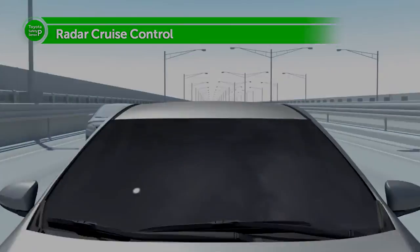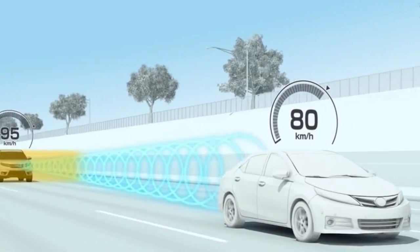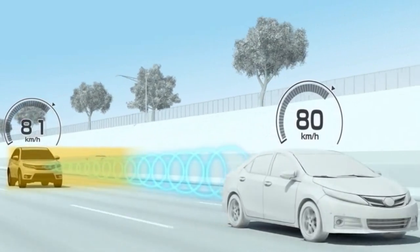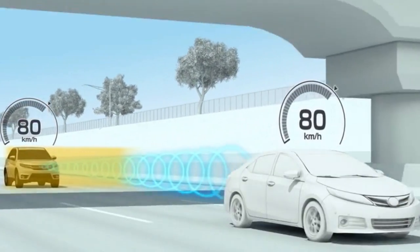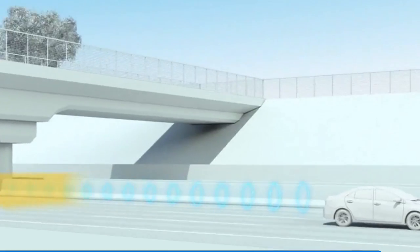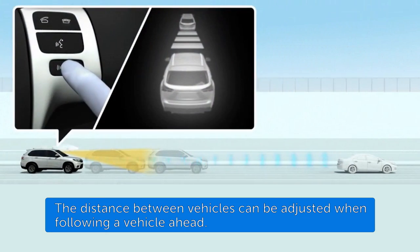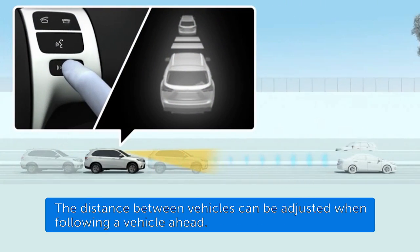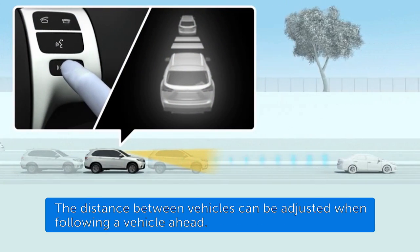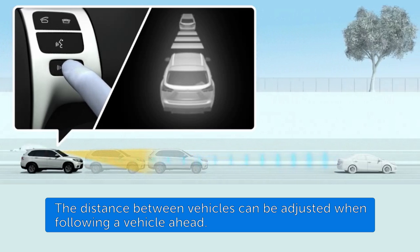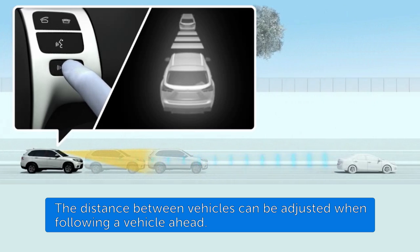The vehicle-to-vehicle distance between your vehicle and the preceding vehicle can be set by operating the vehicle-to-vehicle distance control. Pressing the button allows the driver to choose from three vehicle-to-vehicle distance settings.